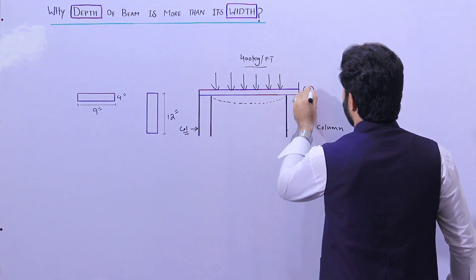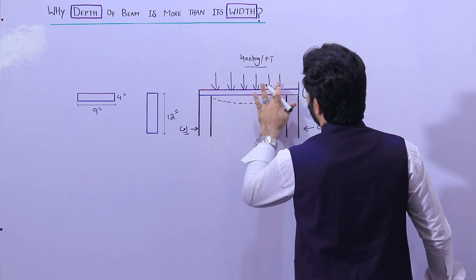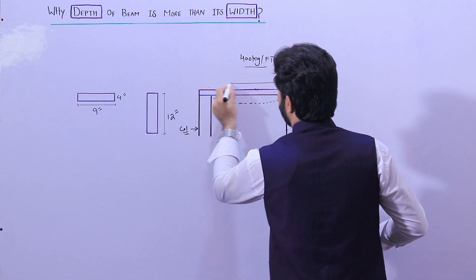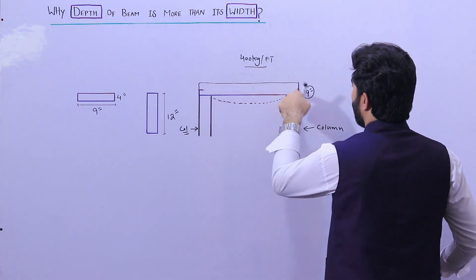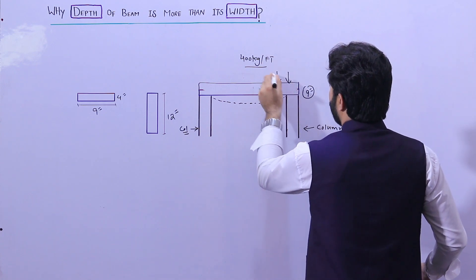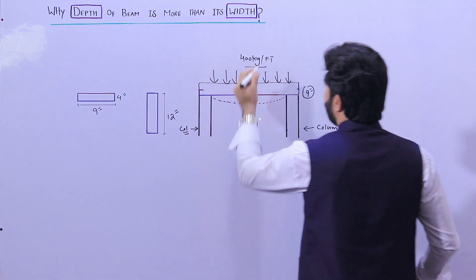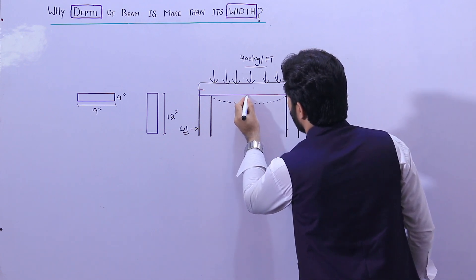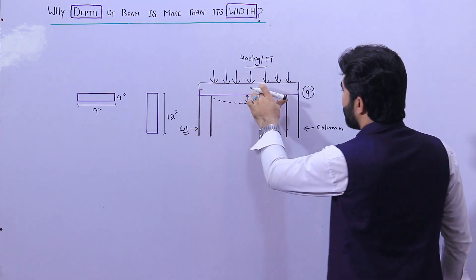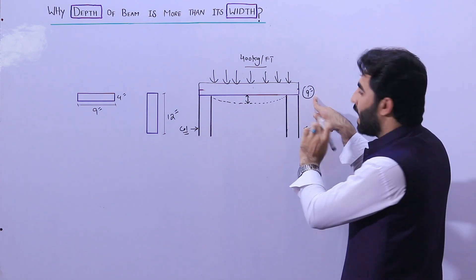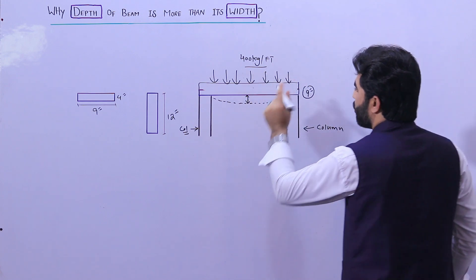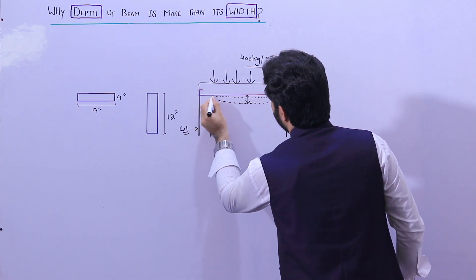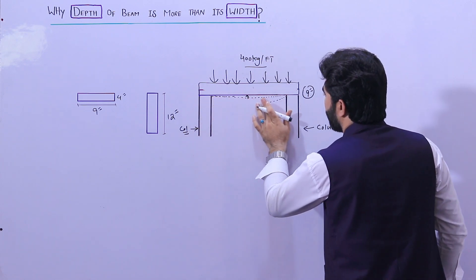Now this is 9 inches — this is the other example. Before, the depth was 4 inches; now it's 9 inches. I apply the same load of 400 kg per feet. You can see the first example had clear deflection. Now with the depth at 9 inches, it can resist the structural load. So the deflection you can see is much less — maybe something like this — compared to the 4-inch case.